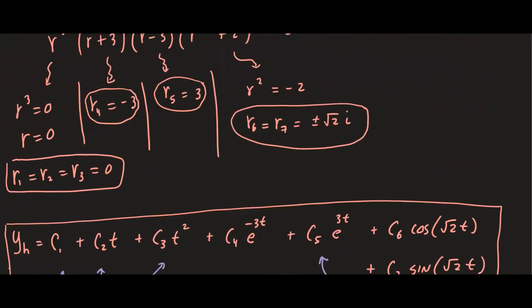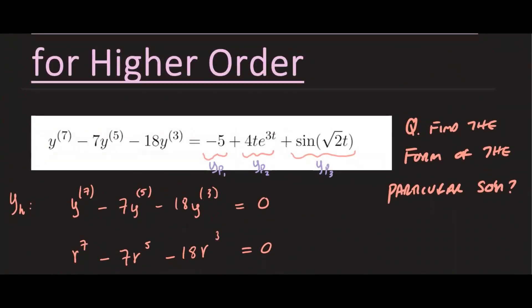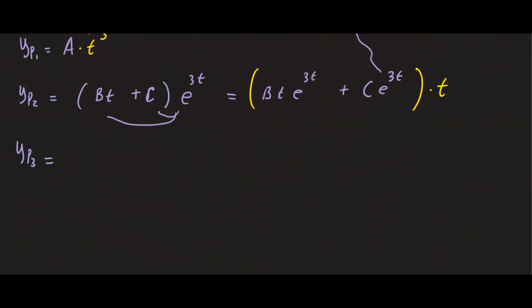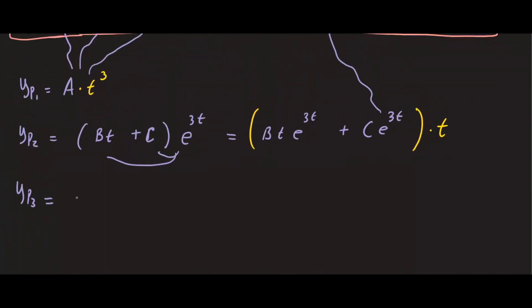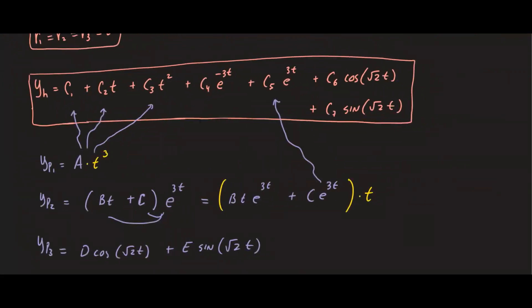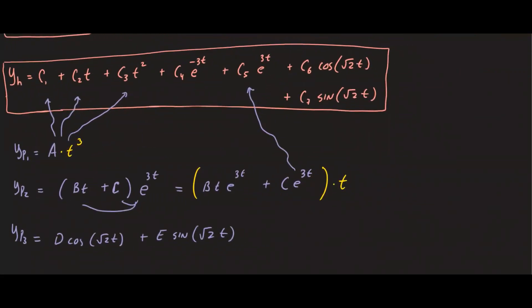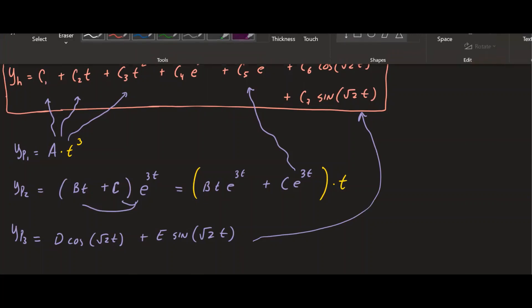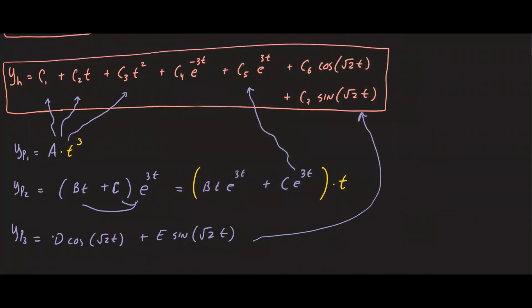For yp3, we're looking at sine of square root of 2t. For sine and cosine terms, you need both sine and cosine in your guess. Checking against the homogeneous solution, both cosine of square root of 2t and sine of square root of 2t already appear there, so there is a duplication. We remove it by multiplying by t, and now all terms are distinct from the homogeneous solution.